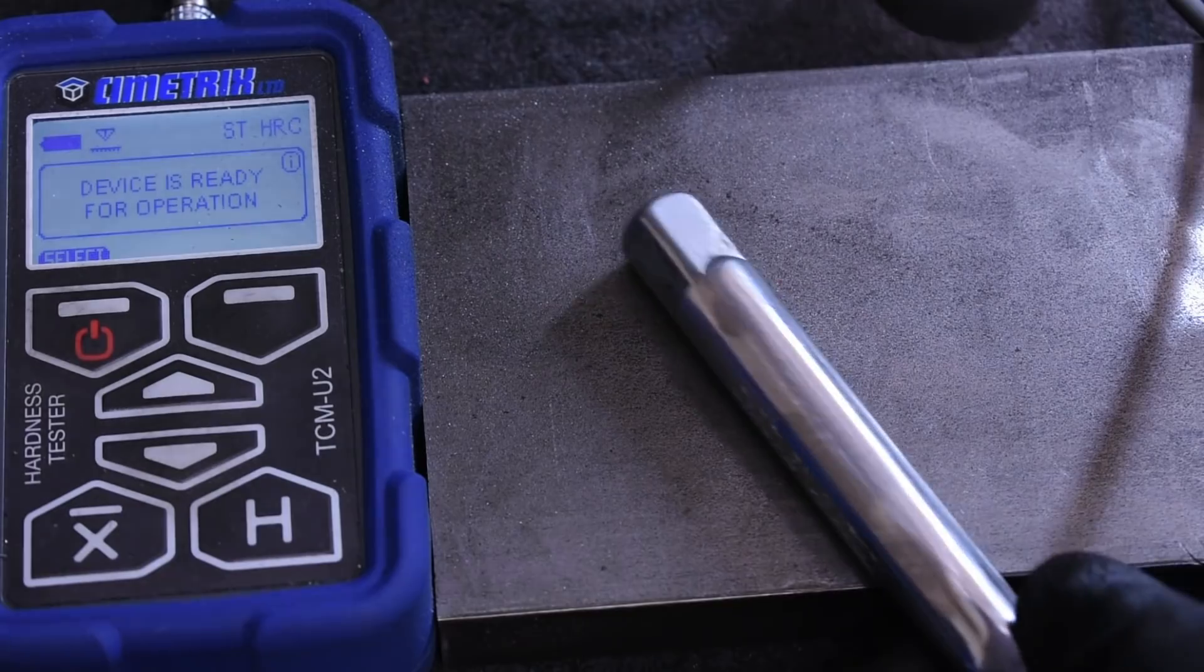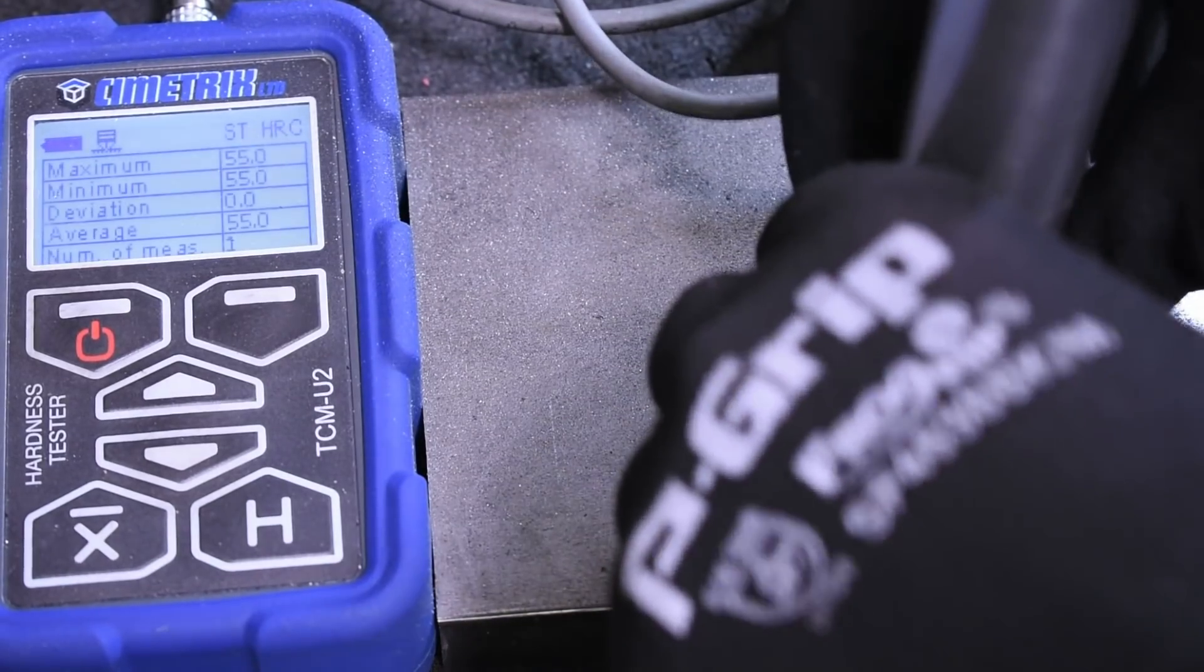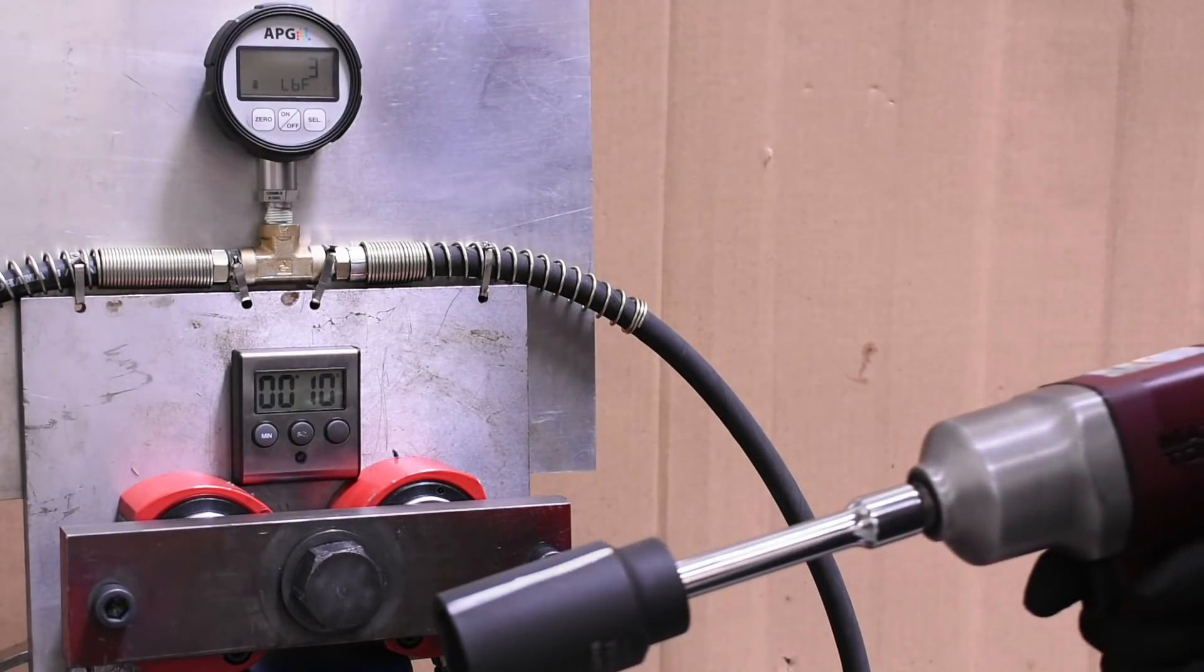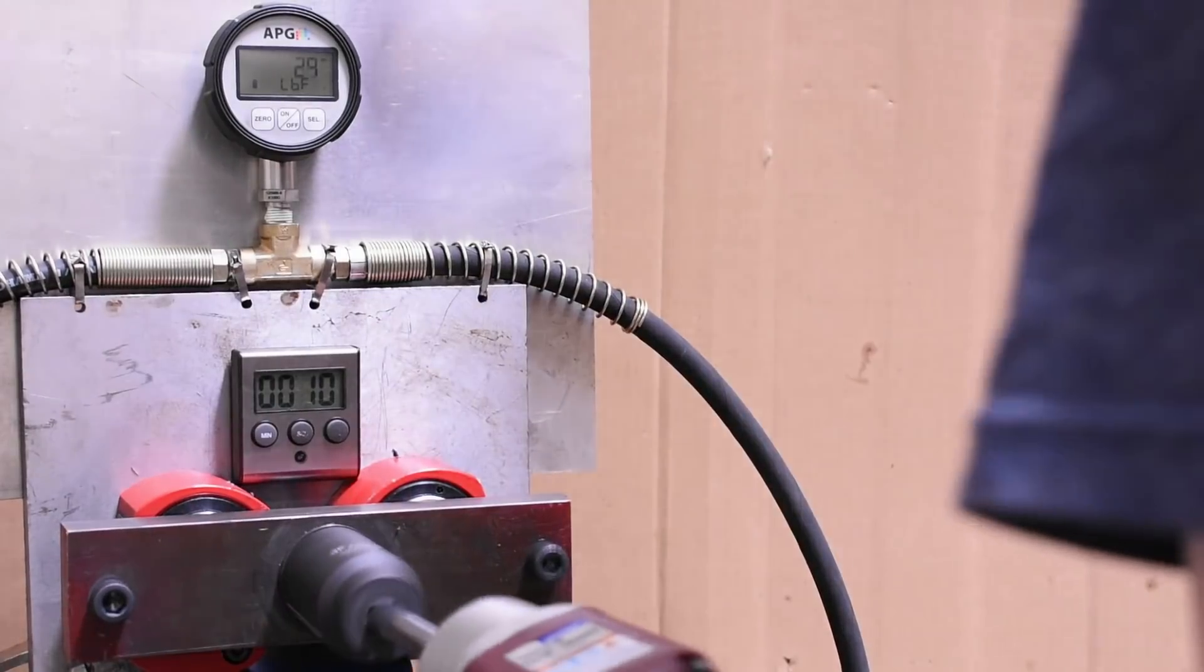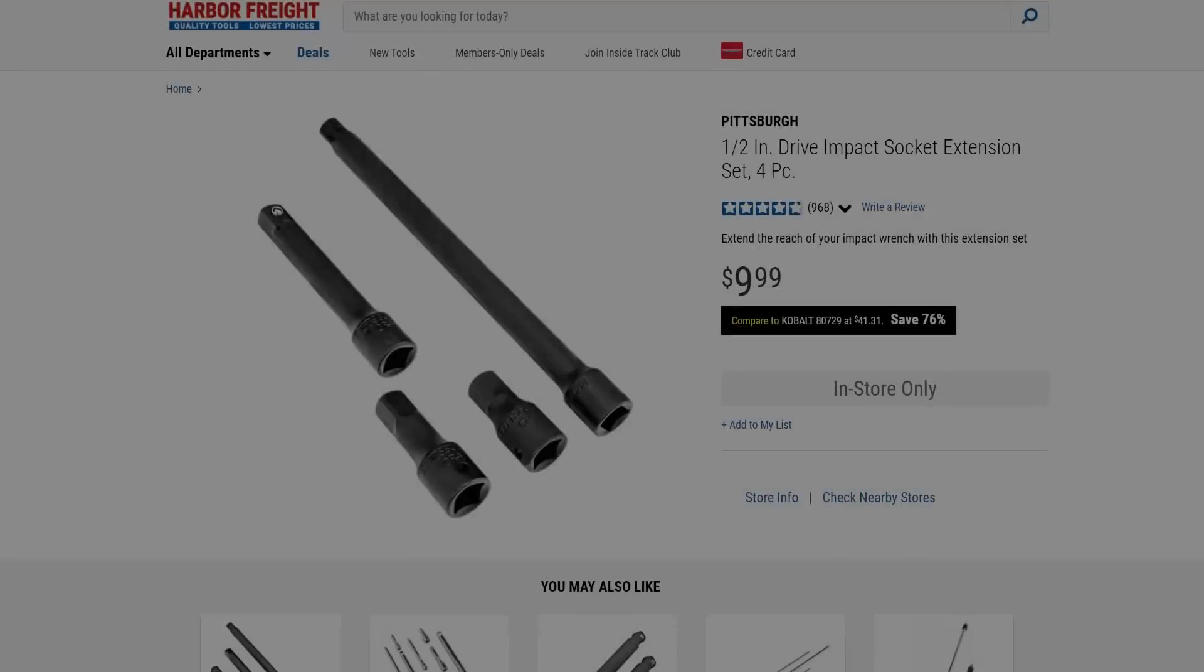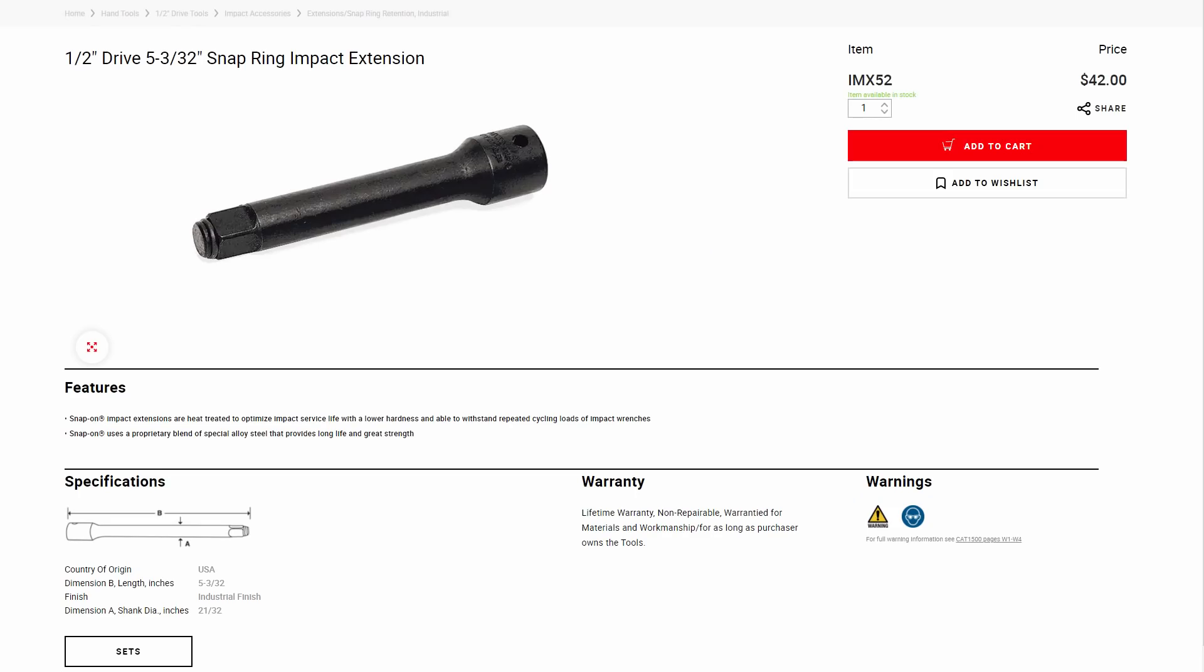So for these extensions today, we're going to measure them, compare their hardness, then strap them onto the dyno to see how much power each loses versus our baseline run, and determine if there's a reason you should be using black versus shiny extensions, and tightening your purse strings or forking over that cache when it comes to tools like this.